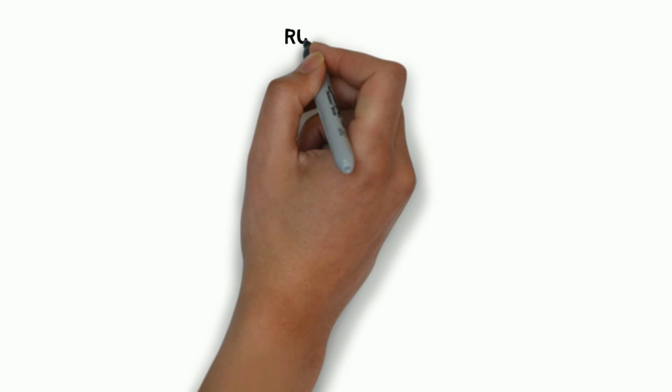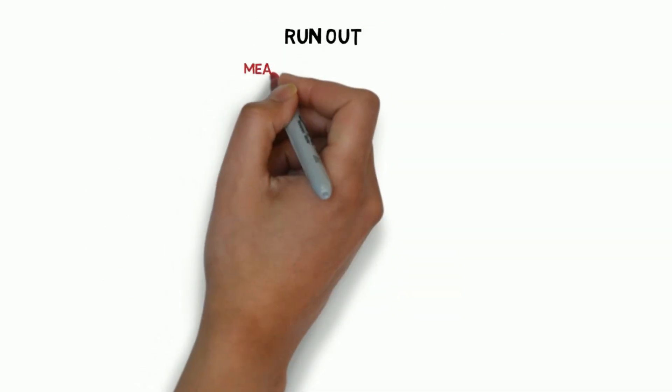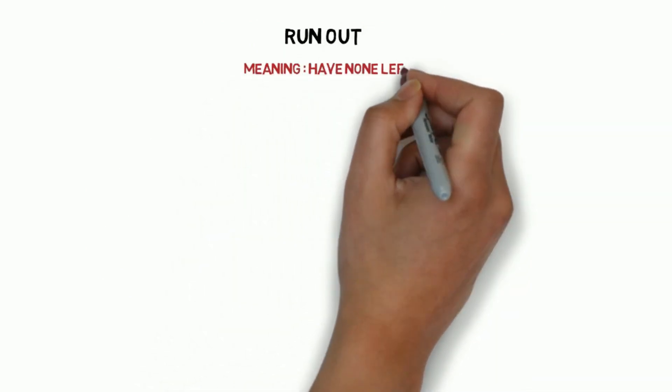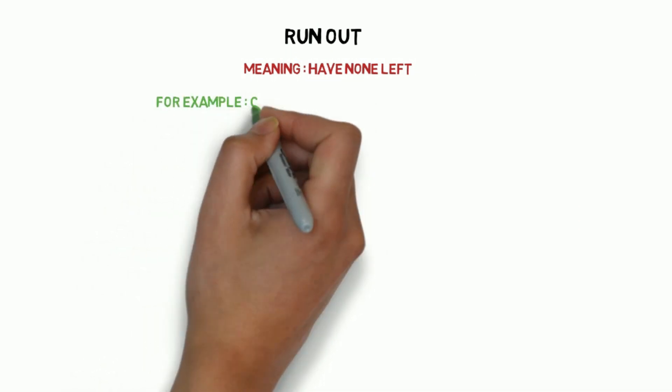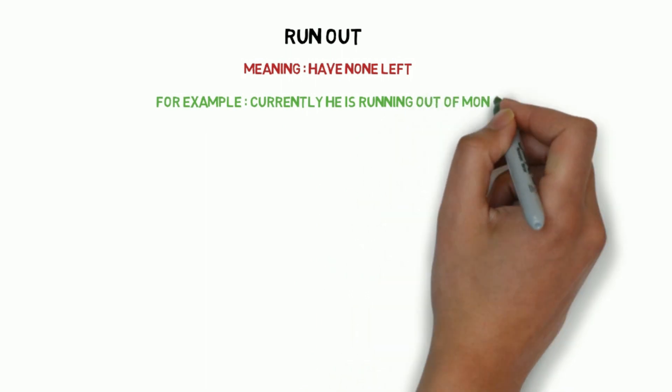Next is 'run out,' which means to have none left — jab aap ki cheezein khatam ho jati hain. For example: currently he is running out of money — abhi uske paas paisa khatam ho raha hai.